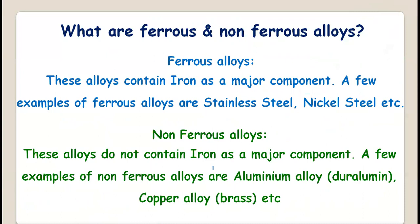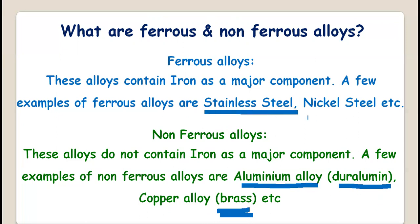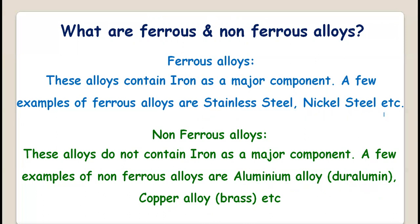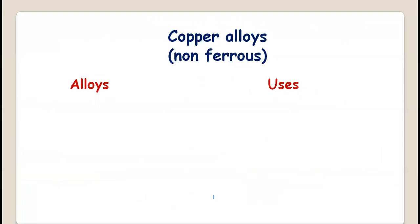Non-ferrous alloys are those alloys which do not contain iron as a major component. A few examples of non-ferrous alloys are aluminium alloys — for example, duralumin — and copper alloys — for example, brass. So duralumin and brass are non-ferrous alloys; stainless steel and nickel steel are ferrous alloys.